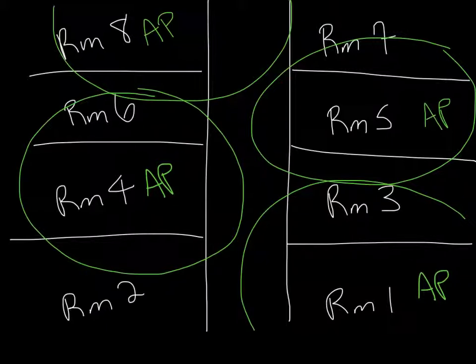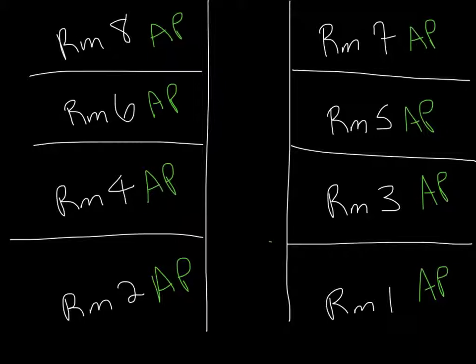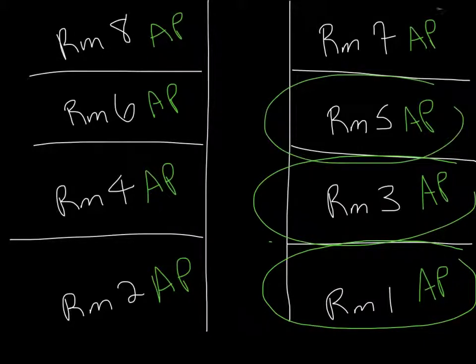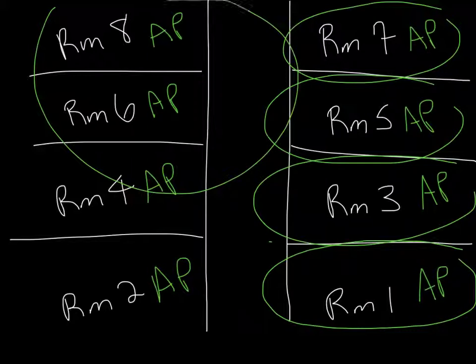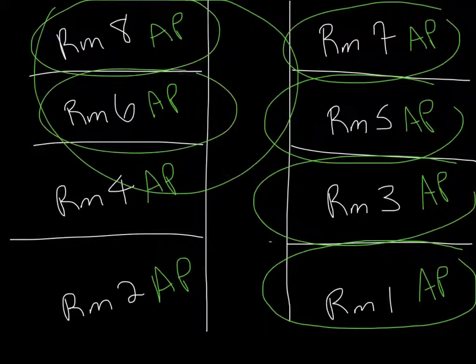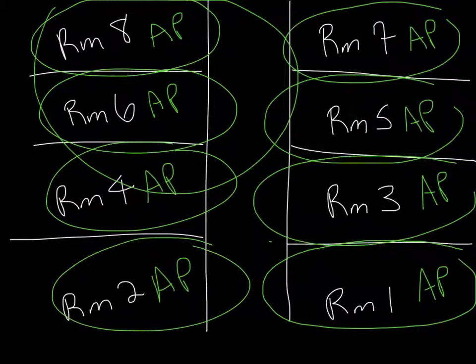These access points cover the majority of the area, but we also need to worry about density — how many users can actually connect to only 4 access points? Not as many as if we had 6 or 8. So right now we have full coverage but limited capacity. An alternative would be to add more access points, but reduce the circumference area of each so they cover a smaller space. This way, we still cover the same total area and all classrooms can get a connection, but more users can be on the network.